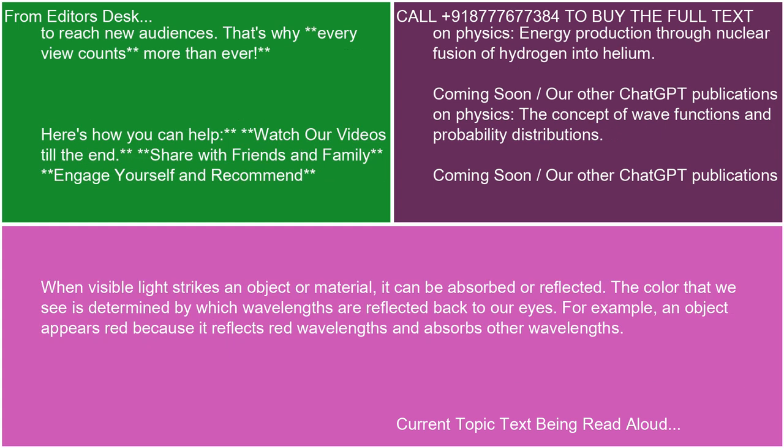When visible light strikes an object or material, it can be absorbed or reflected. The color that we see is determined by which wavelengths are reflected back to our eyes. For example, an object appears red because it reflects red wavelengths and absorbs other wavelengths.